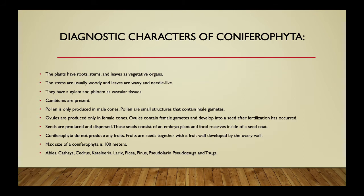Coniferophyta has roots, stems, and leaves as vegetative organs. Stems are usually woody and leaves are waxy and needle-like. They have xylem and phloem as vascular tissues, and cambium is present. The cambium produces xylem and phloem each year, increasing the girth of the wood. Woody plants with this type of cambium system in their vascular bundle are known as having an open type of vascular bundle.